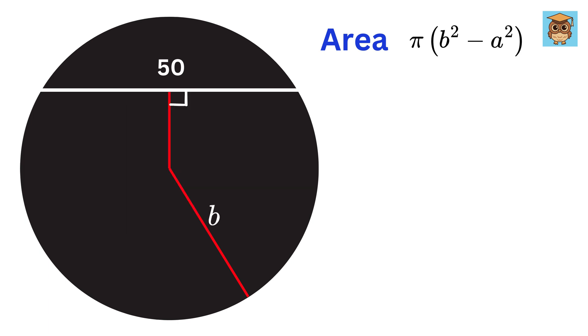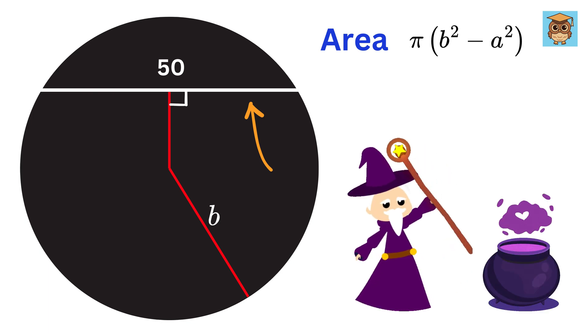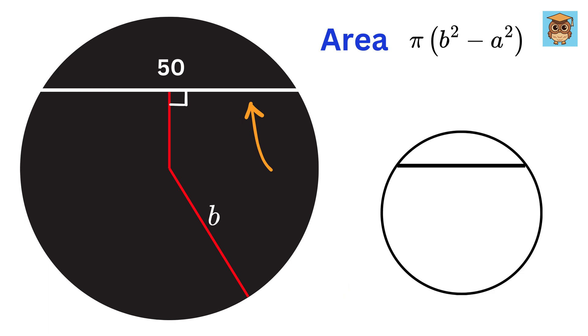Not only that, now consider this outer circle. This same line is a chord to the outer circle, and here comes the magic. In a circle, if you draw a line that is perpendicular to the chord from the center of the circle like this, then that line divides the chord into two equal parts, and it is also called a perpendicular bisector.